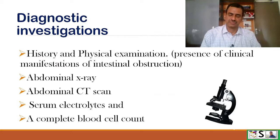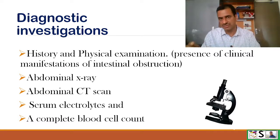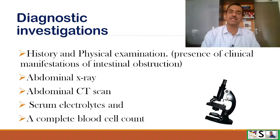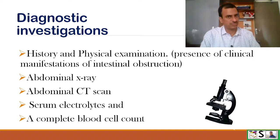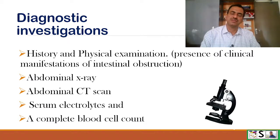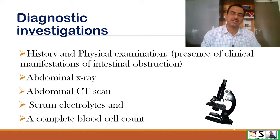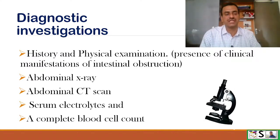Diagnostic investigations: History and physical examination reveals the signs and symptoms related to intestinal obstruction, giving a clue of the condition. For confirmed diagnosis, abdominal X-ray and abdominal CT scan can confirm it. Some additional blood investigations such as serum electrolytes and complete blood count are also done.